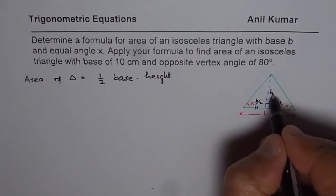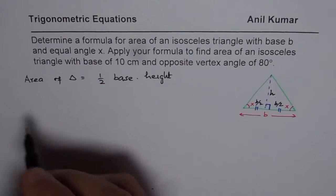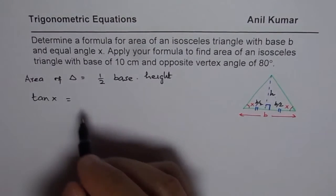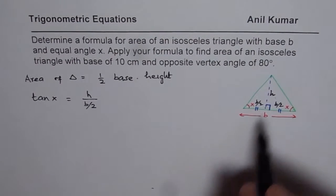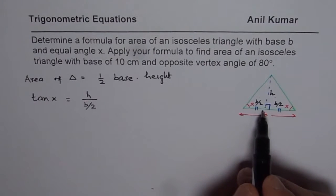So what is height? We can find a relation between height and the side and the angle. So we can say what is tan of x? Tan of x is height over b by 2. So that is tan in terms of height and the base given to us.